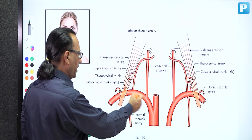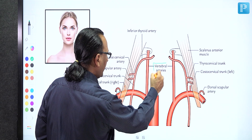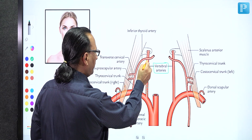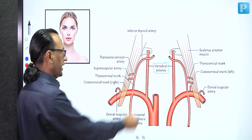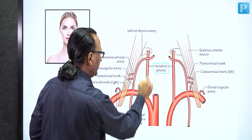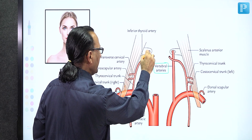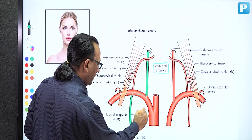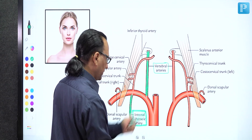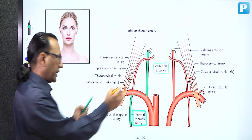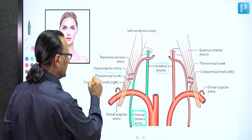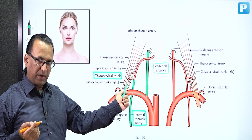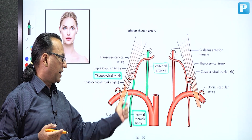In the VIT branches: V is the vertebral artery, coming from the first part of the subclavian artery, ascending up and contributing to the circle of Willis to supply the brain. I is the internal thoracic artery, going downwards to supply the thorax region. T is the thyrocervical trunk, supplying the thyroid gland and the cervical/neck region. The thyrocervical trunk itself gives three branches remembered by the mnemonic 'SIT'.